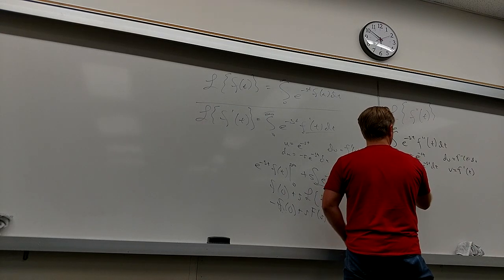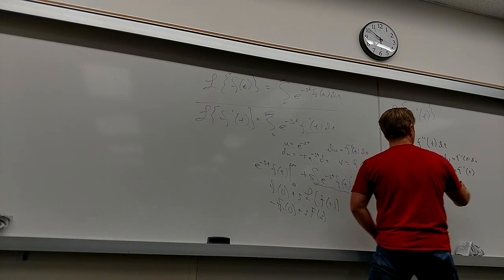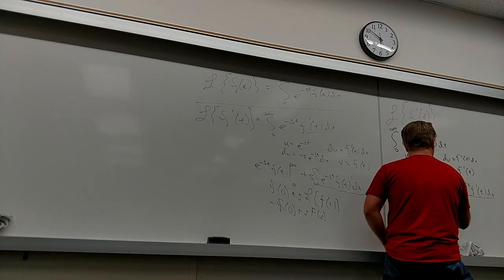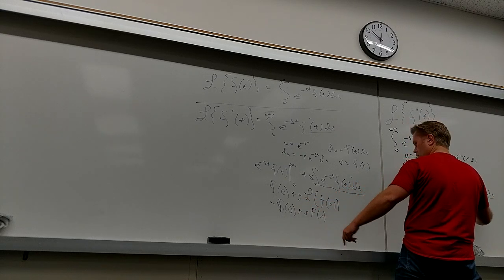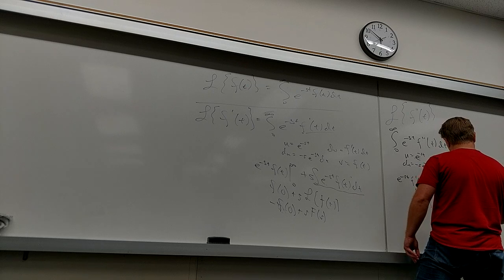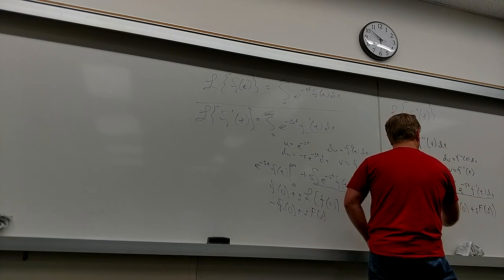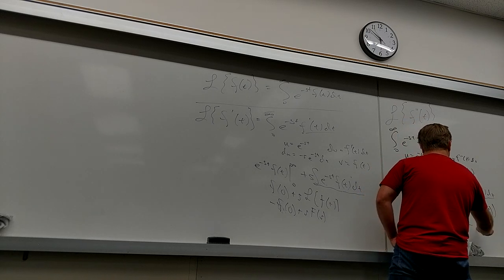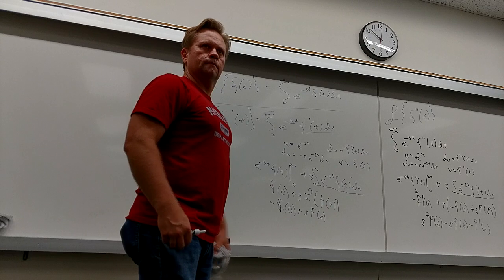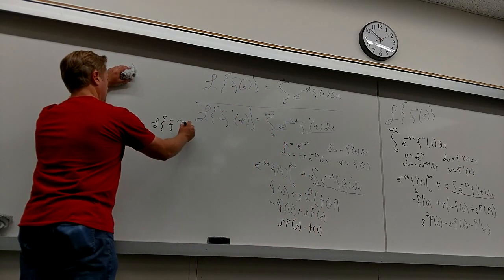So then I get this, of course, is this. And then I get S squared F of S minus S F of 0 minus F prime 0. This was S F of S minus F of 0. So we got Laplacian F prime is this.